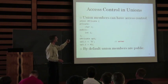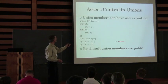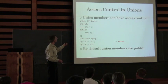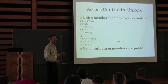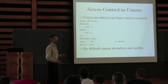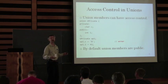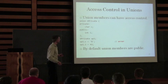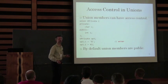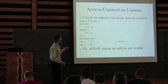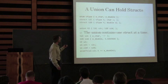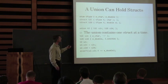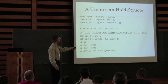In C++98 even, union members can have access control — you can have a private member of a union. By default the members are public. You can put a struct inside of a union; the union contains one struct at a time.